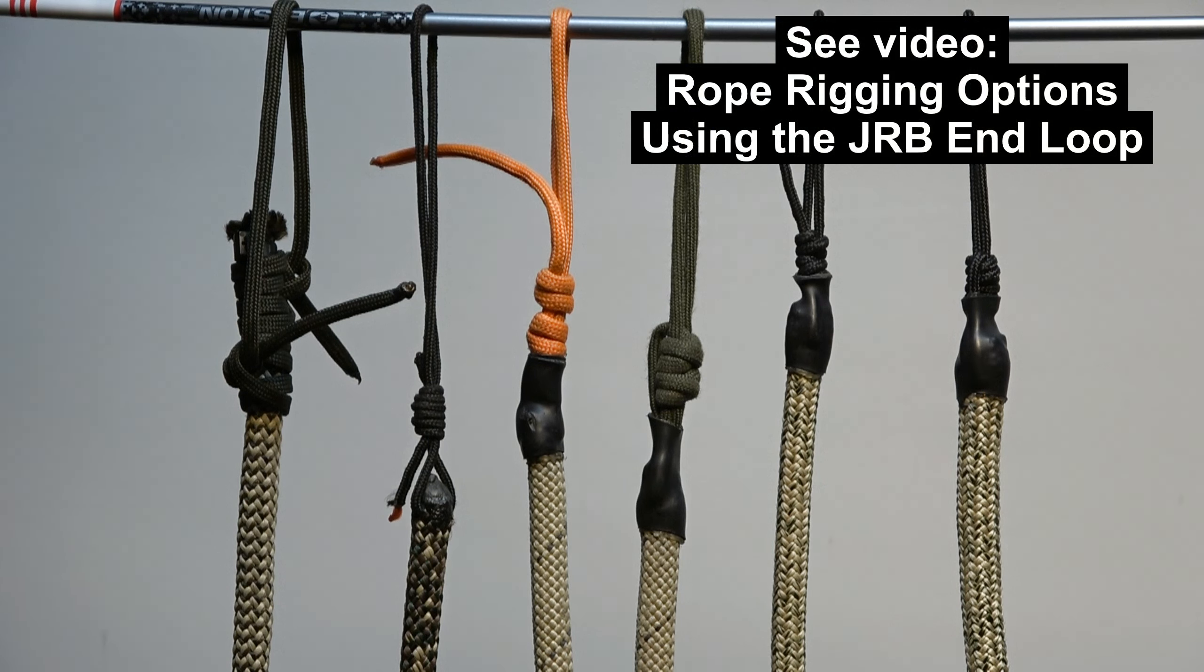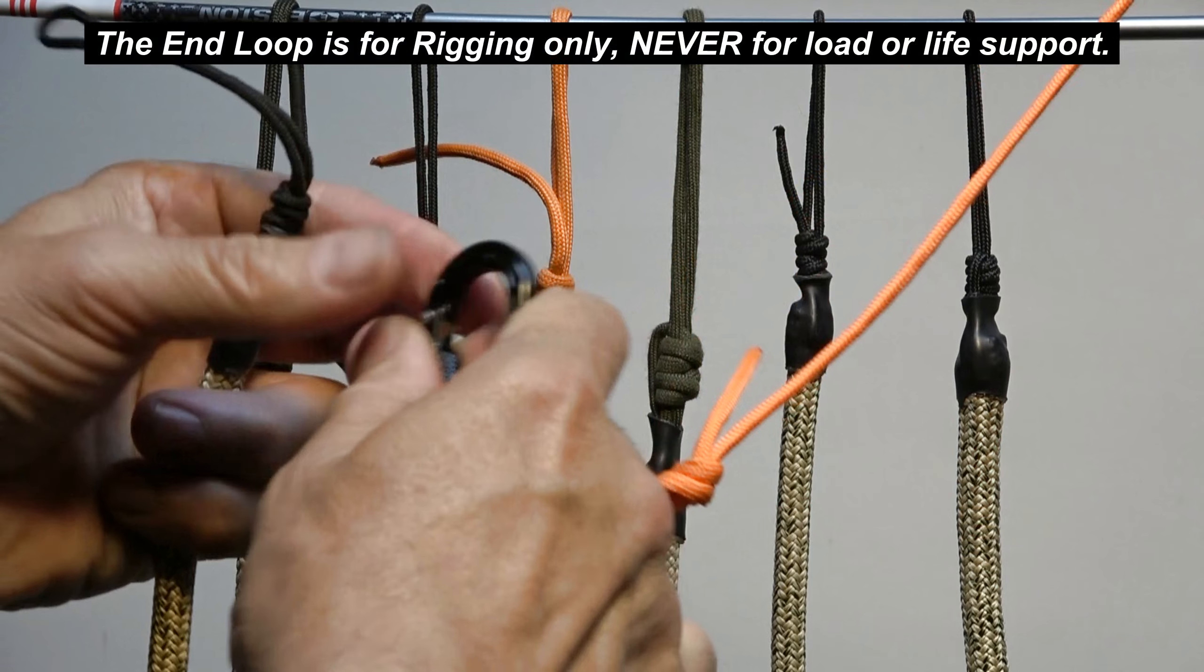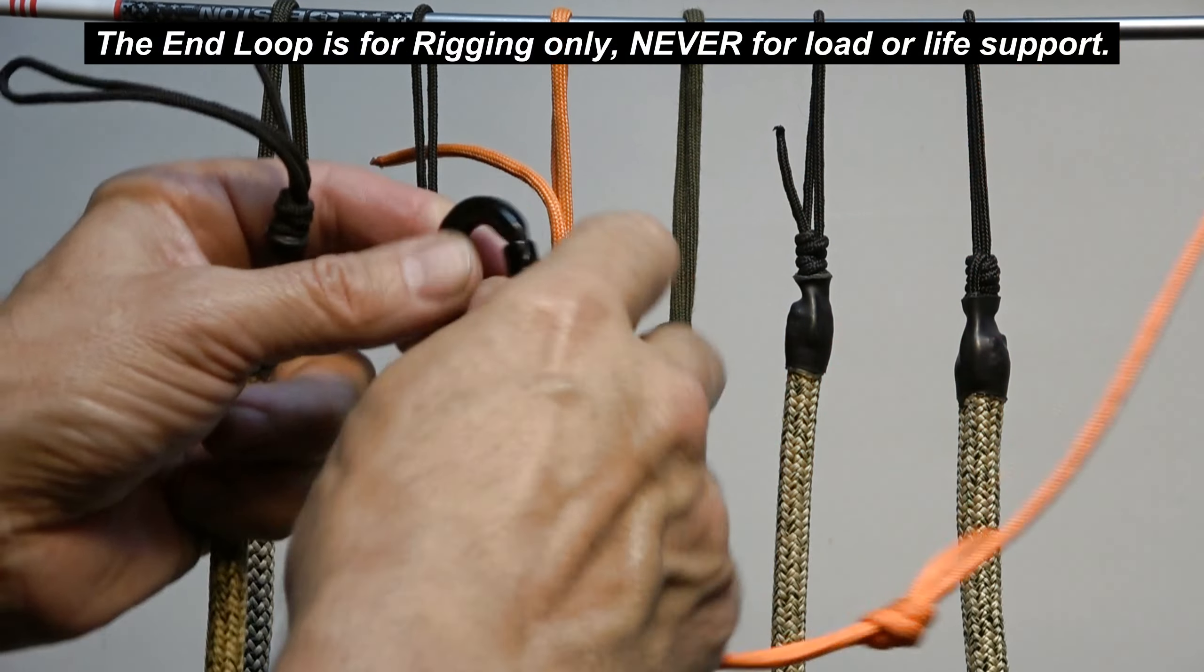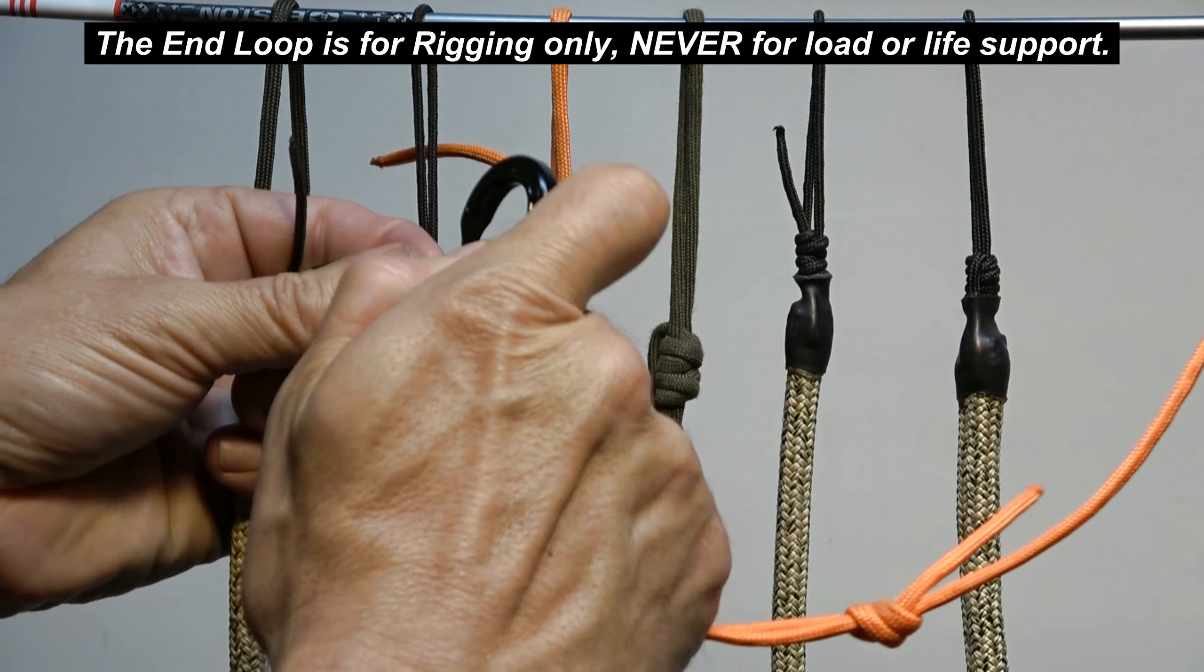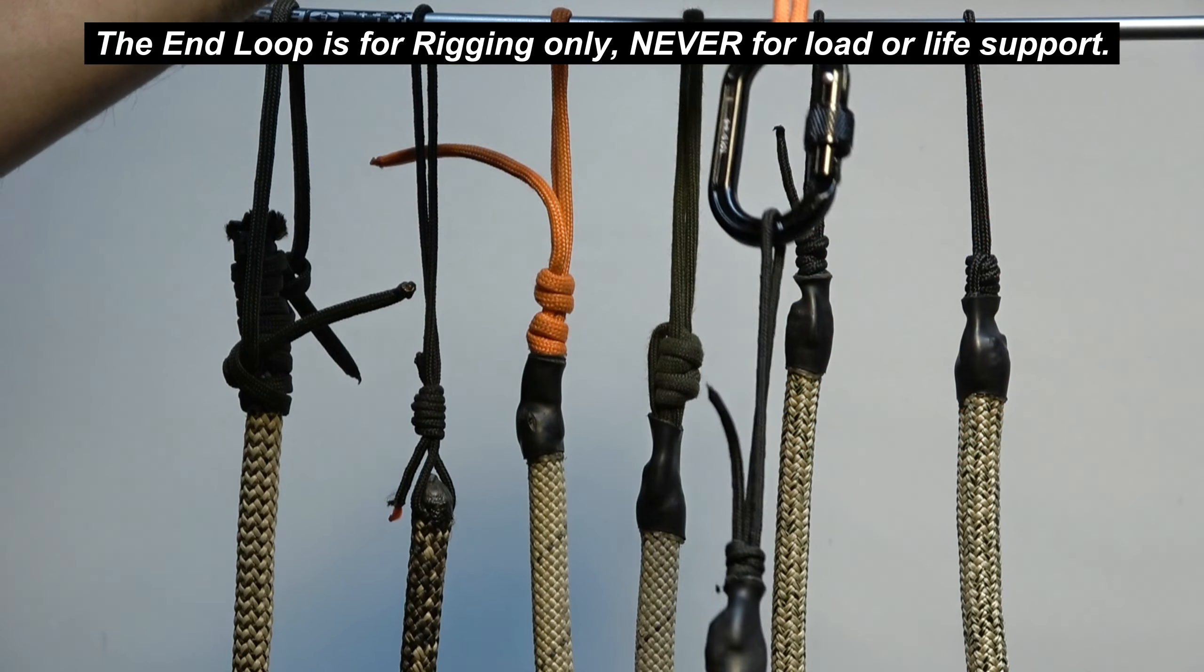See my video on rope rigging options with the JRB end loop. It makes it easy to put a rope in a tree and get it through a tree crotch really easily, even when we're working in low light conditions and even when we have gloves on.